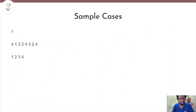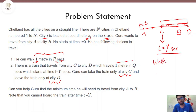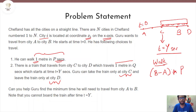Now let's look at the sample case. The main way to solve this problem is as follows: if Guru decides to walk from city a to city b, the time taken is the distance b minus a multiplied by p, since walking speed is 1 meter in p seconds. This gives us the walking time directly.